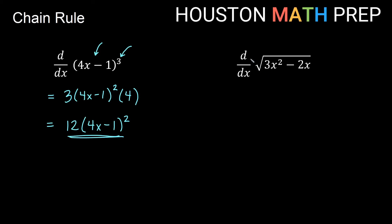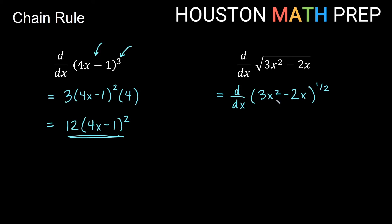Let's look at this other one. We have the derivative with respect to x of the square root of 3x squared minus 2x. We have this idea of 3x squared minus 2x inside of the idea of square root of something. We want to rewrite this and think of this as a power — think about the square root of something as that something to the one-half power. So this would be the same as the derivative of 3x squared minus 2x all to the one-half.